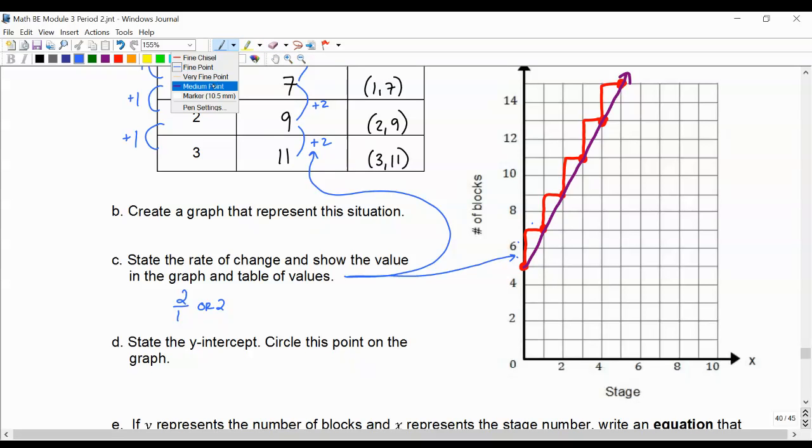Then we're going to identify our y-intercept. And our y-intercept is where the graph starts. So that is (0, 5), and it was also in our table.